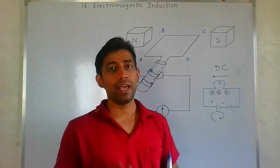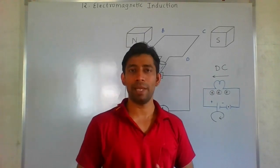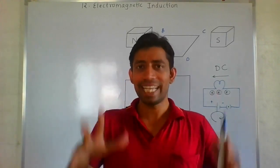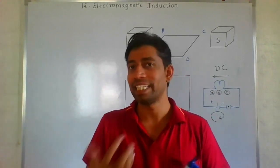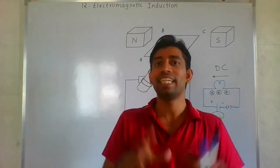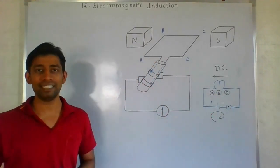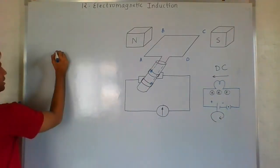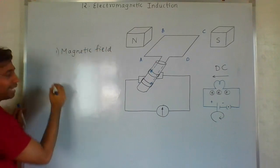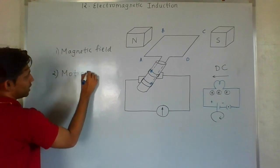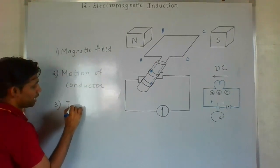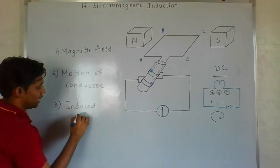Let's try to understand the generator. Before going to that, a simple concept in simple language: if there is a magnetic field present, and inside that magnetic field there is motion of a conductor, then definitely it will result in generation of current. In simple terms — if magnetic field is present and there is motion of a conductor in that magnetic field, then this will result in current generation, which we call induced current.